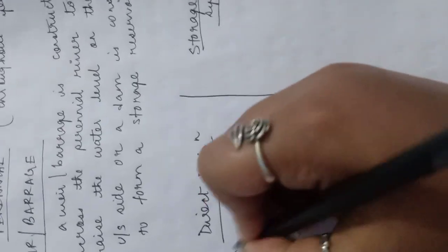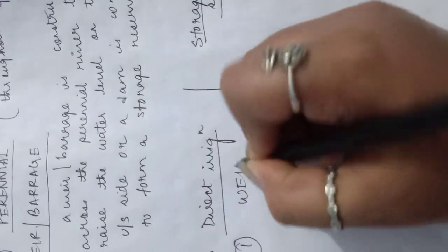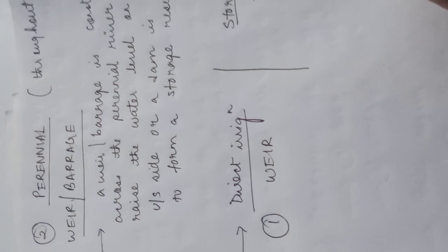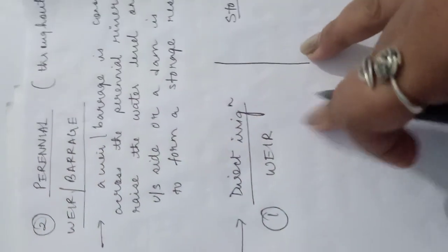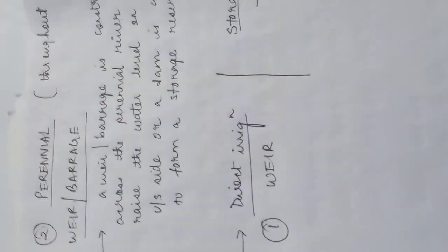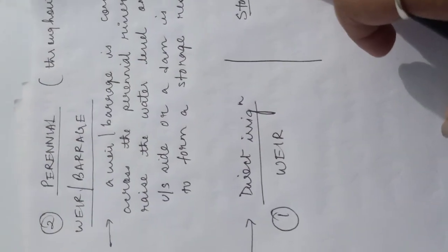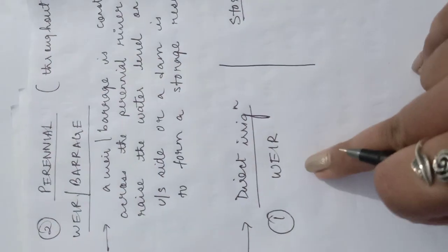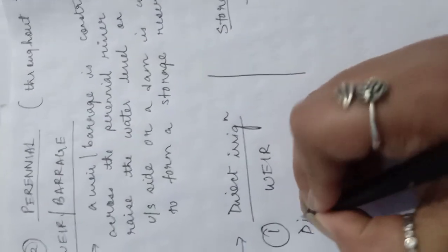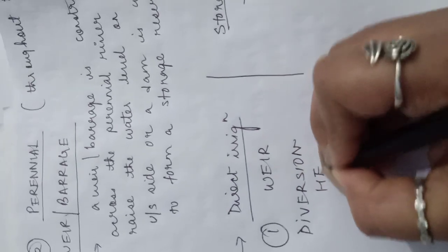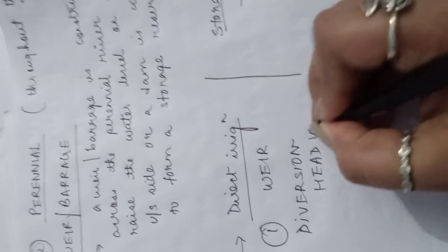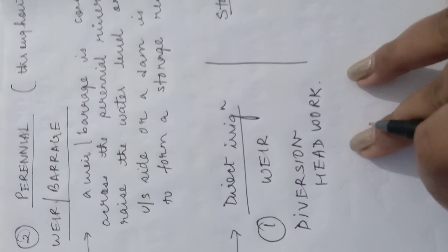In the direct irrigation system, a weir or barrage is constructed to raise the water level on the upstream side so that water can flow through the canal. The hydraulic structure constructed in the direct irrigation system is known as a diversion headwork.